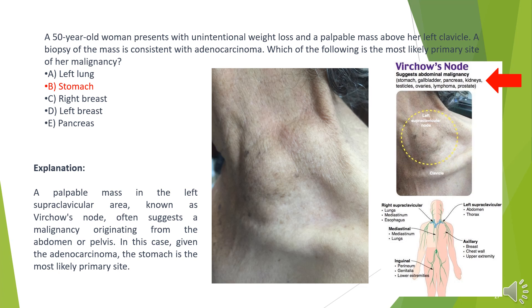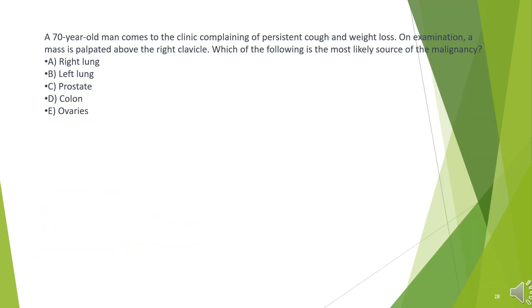The answer is B. Stomach. A palpable mass in the left supraclavicular area, known as Virchow's node, often suggests a malignancy originating from the abdomen or pelvis. In this case, given the adenocarcinoma, the stomach is the most likely primary site.